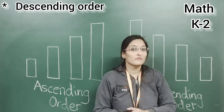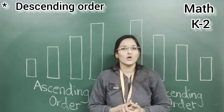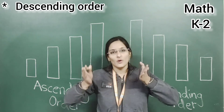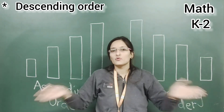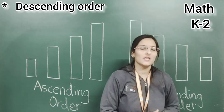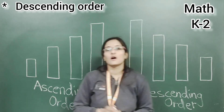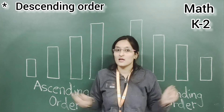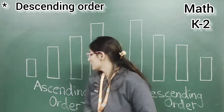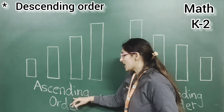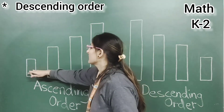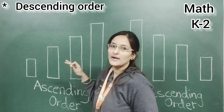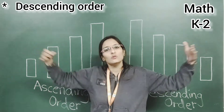Prior to this, we have learned one more order, that is ascending order. In ascending order, what are we doing? We are arranging numbers from smallest to the biggest. We arrange numbers from small to big in ascending order. Today we will learn the opposite of that — descending order.